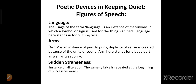Then next is 'arms.' Arms is an instance of pun. In pun, a duplicity of sense is created — the poet uses a word but it does not relate to its exact meaning. Here, 'arm' otherwise refers to a weapon, but the poet referred to one of the body parts. Whether you are using your hands for your mobile phone, writing with a pen, or just playing with a pen — that would be referred to as using the arm. So arm is a pun here, referring to the body part that is the hand.